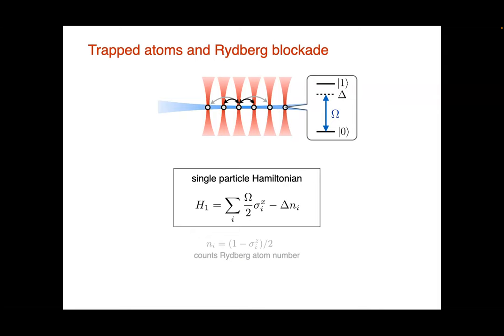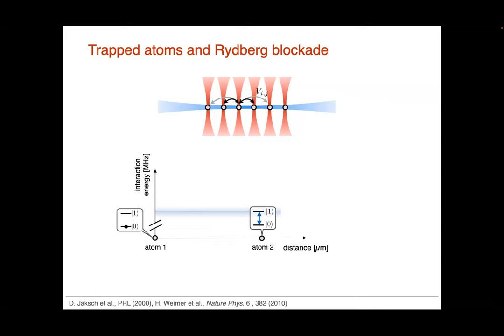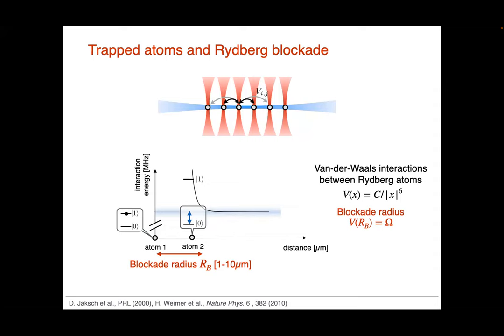Interesting physics comes from the Rydberg interaction. If you have one atom in the ground state, the other atom can undergo Rabi oscillations described by the single-particle Hamiltonian. But if the first atom is in the Rydberg state and you have two atoms in the Rydberg state, they interact by this dipole-dipole interaction, which is strongly distance-dependent. If you bring them within the Rydberg blockade radius, you cannot excite a second Rydberg excitation — this is the celebrated Rydberg blockade effect, and this is basically all I'm going to need in both parts of this talk.